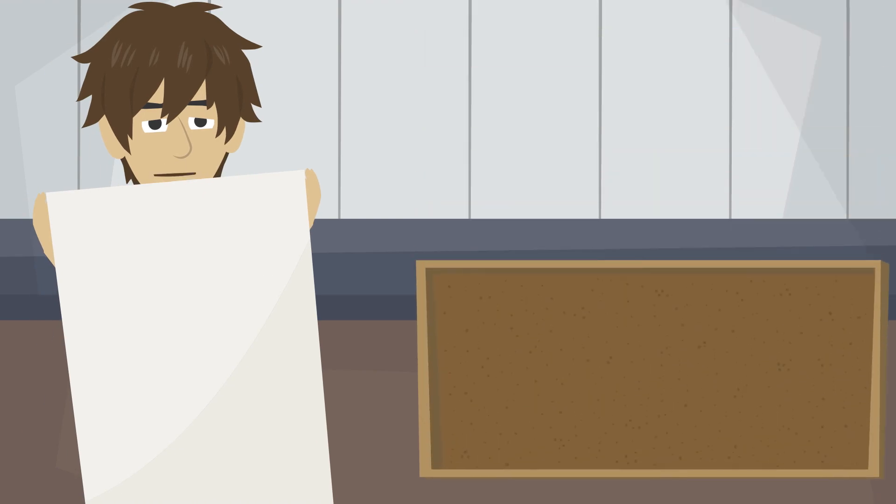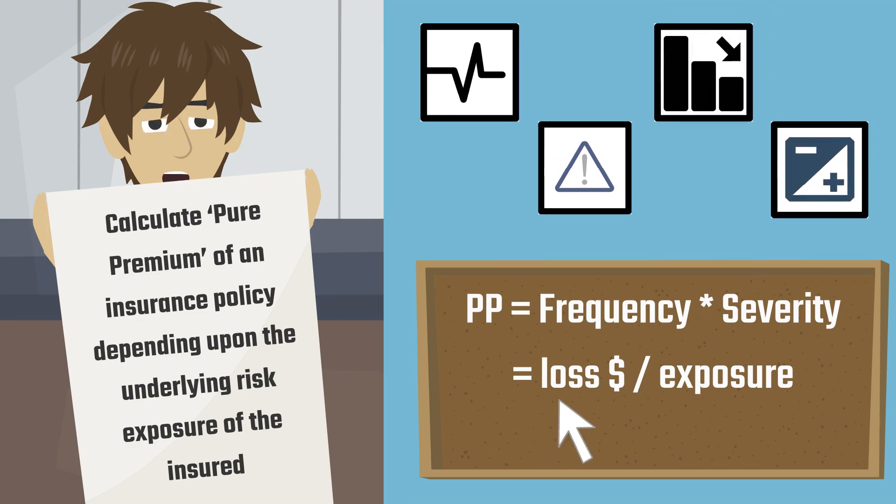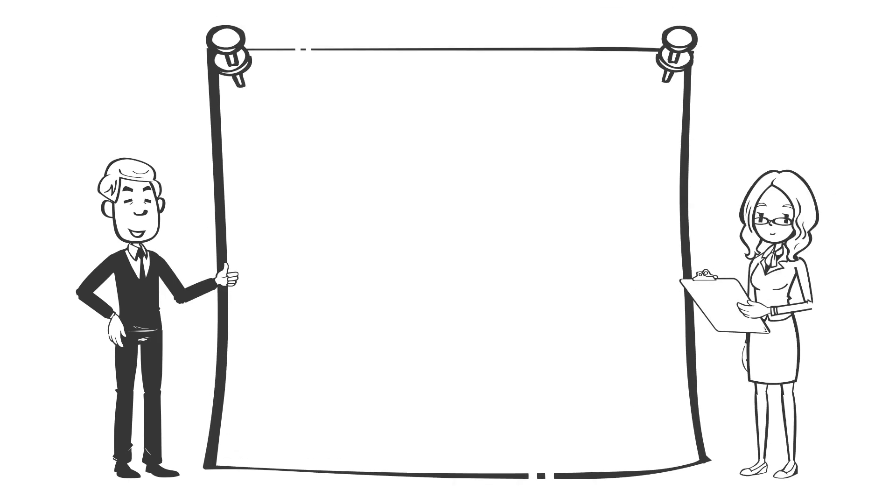Calculate pure premium of an insurance policy depending upon the underlying risk exposure of the insured. Pure premium equals frequency into severity, equals lost dollar divided by exposure. EZ Data Munch approach.